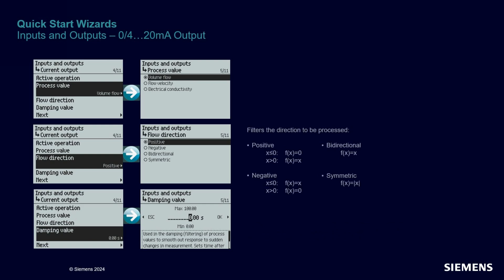You can also impose a constraint on the output based on your application. For example, you may elect to have zero output when the flow is calculated as negative — you can pick one of four modes. You can also apply a damping filter at the output by setting the time constant. This is a simple first-order low-pass filter, which means the time constant represents the time it takes for the output to reach 63% of a step change.